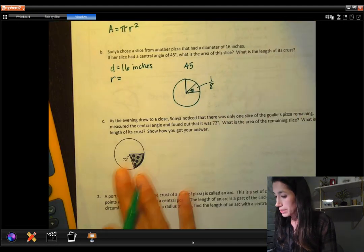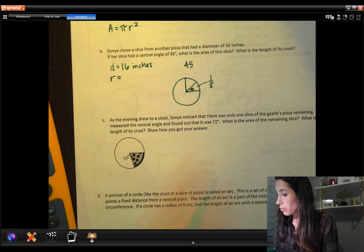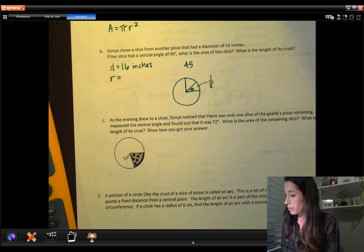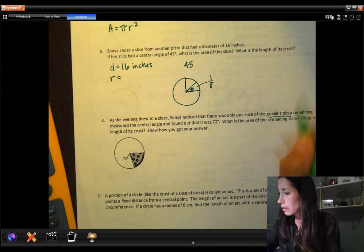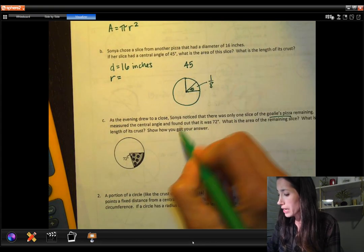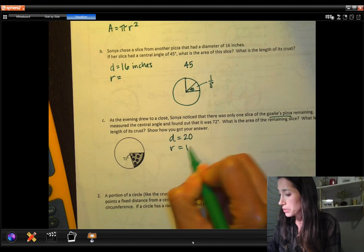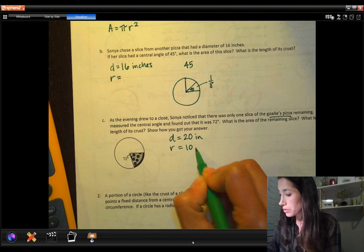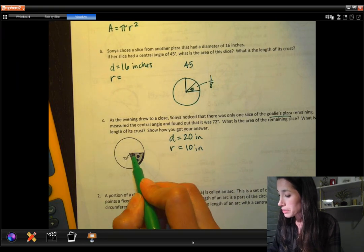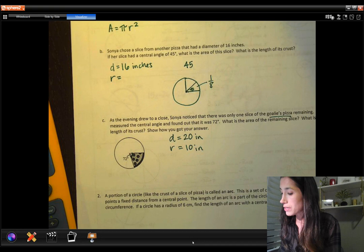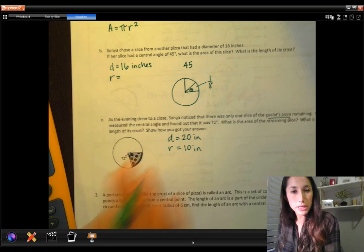Now looking here at this next problem. As the evening drew to a close, Sonia noticed that there was only one slice of the goalie's pizza remaining. So the goalie's pizza, let's make sure we have our information, had a diameter of 20, so that means our radius was 10. That's in inches. She measured the central angle, that's here, at 72 degrees.